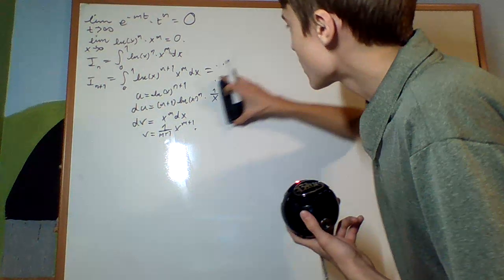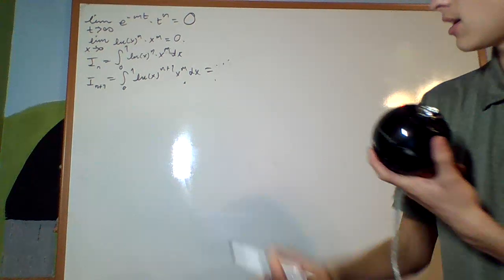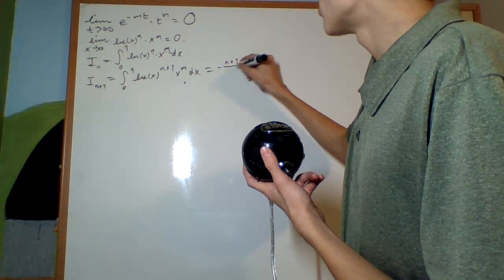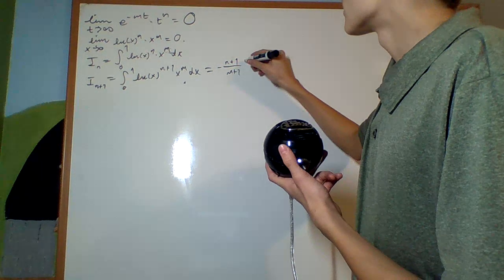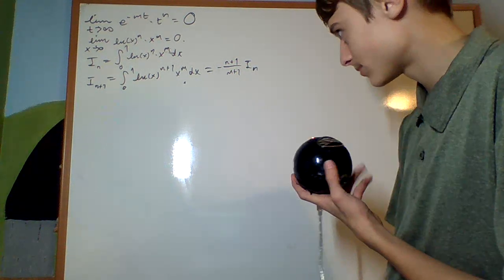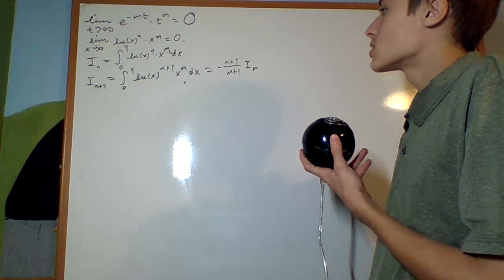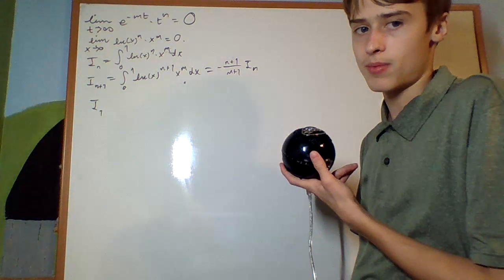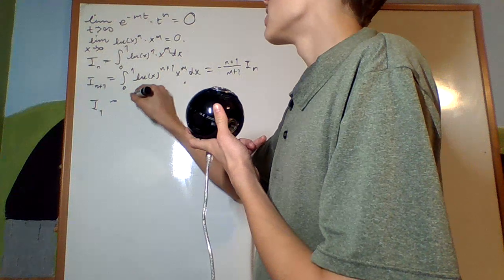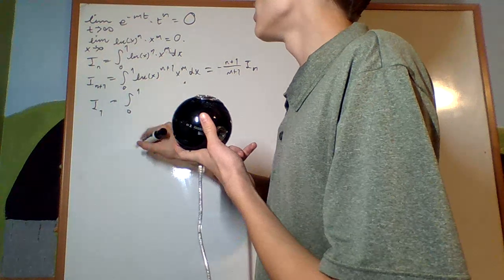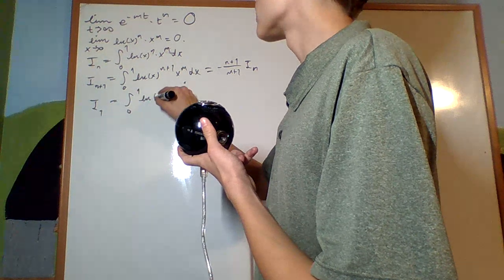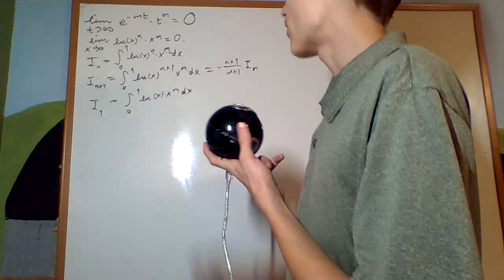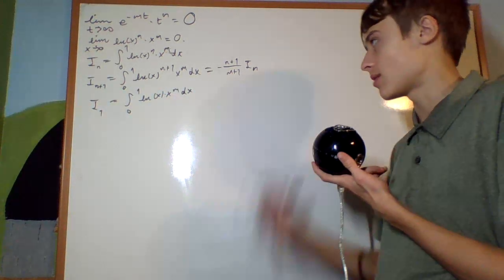Putting that back in, I get I_{n+1} equals negative (n+1) over (m+1) times I_n. This is important because if I figure out I_1, I instantaneously know what all of them are. So I_1 is the integral from 0 to 1 of natural log of x times x to the m dx — if I know one of these, I know all of them.